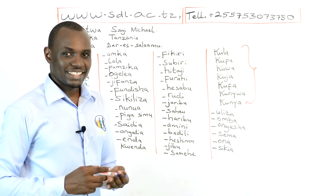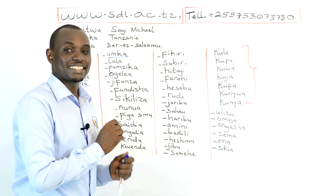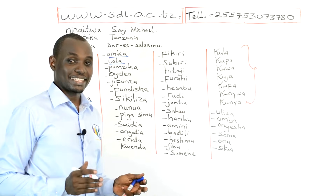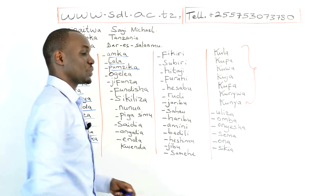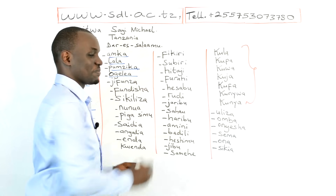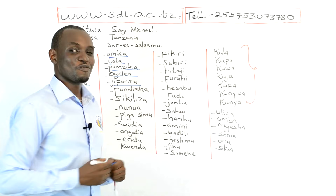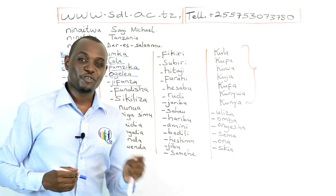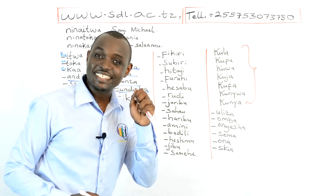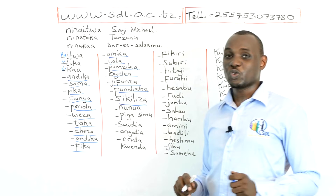Amka means wake up; Ku Amka means to wake up. Lala means sleep; Ku Lala means to sleep. Pumzika means rest, take a break, or relax; Ku Pumzika means to rest, to take a break, to relax. Ogelea means swim; Ku Ogelea means to swim. Jifunza means learn; Ku Jifunza means to learn. Fundisha means teach; Ku Fundisha means to teach. Sikiliza means listen; Ku Sikiliza means to listen. Nunuwa means buy; Ku Nunuwa means to buy.